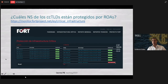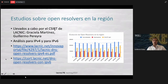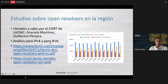But for the DDNS, there is an announcement that says the origin is invalid by RPKI — there is a ROA missing. You can see this for different countries in the Fort project. In addition to that, the people of CSIRT — Graciela and Guillermo — have studied open resolvers in the region. I leave the information available, but you can get in touch with them if you want more information.